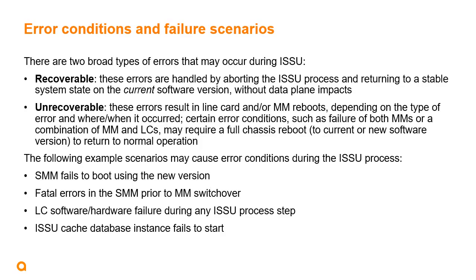There are two broad categories of errors that may occur during the ISSU process. Recoverable errors are handled by aborting ISSU and returning to a stable system state on the current software version with no impact to the switch data plane. Unrecoverable errors may result in line card and/or management module reboots, depending on the type of error and where it occurred. Certain unrecoverable error conditions — such as failure of both management modules, or a combination of management modules and line cards — may require a full chassis reboot to either the current or new software version to return to normal operation.